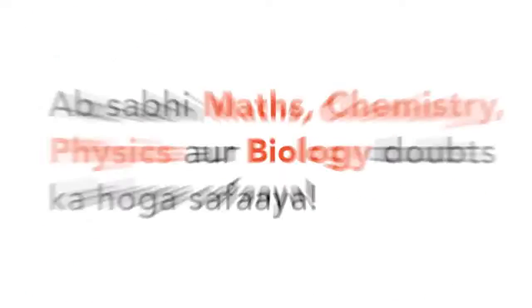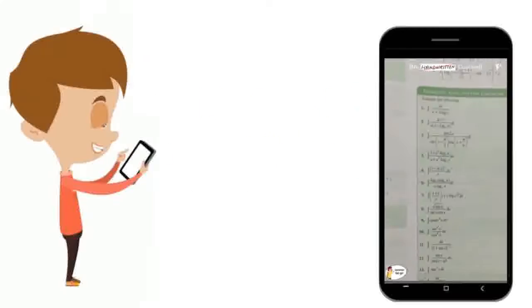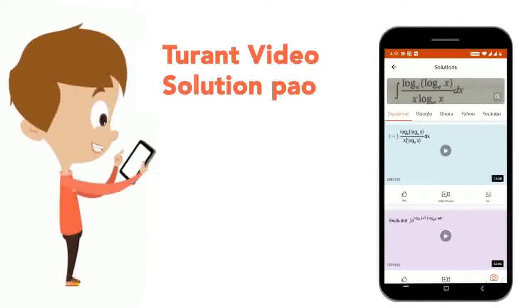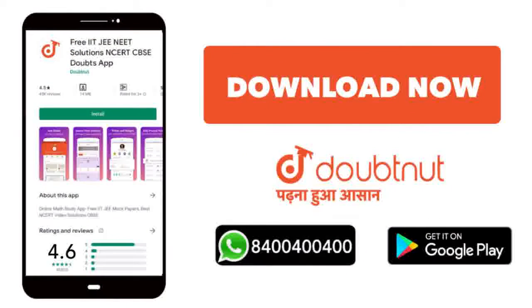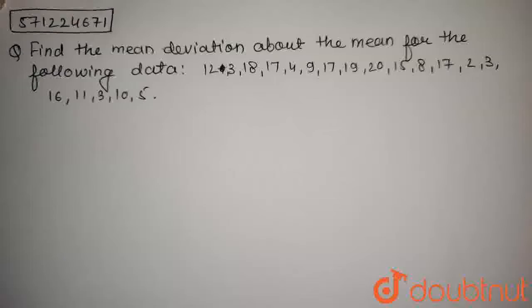Today on Doubtnet app, the question is: find the mean deviation about the mean for the following data.